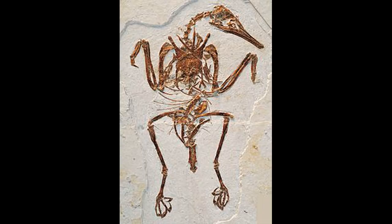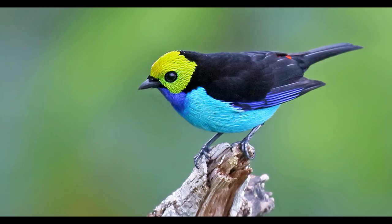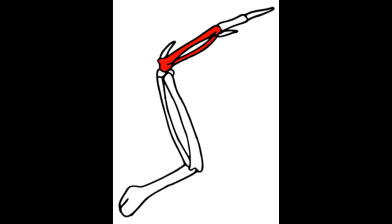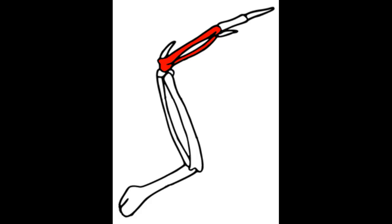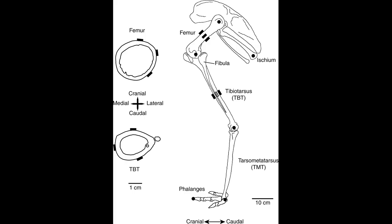Within Ornithothoraces, we find Enantiornithes, the so-called opposite birds, and Euornithes. The enantiorniths are named for their shoulder bones, which are oriented oppositely compared to modern birds, and from the early to late Cretaceous were the predominant bird form. Along the way to the modern birds, collectively classified as Neornithes or Aves, birds underwent a number of other changes. They fused the carpal and metacarpal bones to form the carpometacarpus, the tibia fused with some tarsal bones to form the tibiotarsus, the fibula greatly reduced, other tarsal and metatarsal bones fused to form the tarsometatarsus, and the sacrum fused with a number of vertebrae to form the synsacrum.